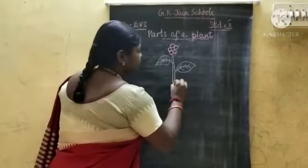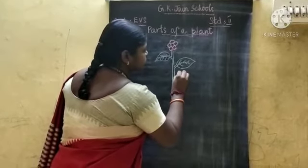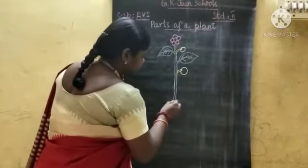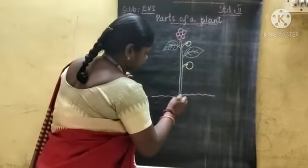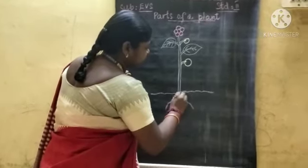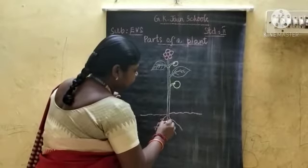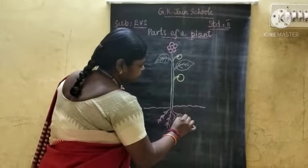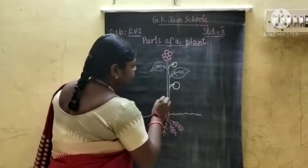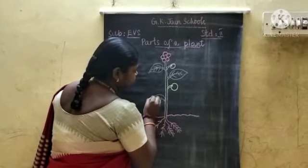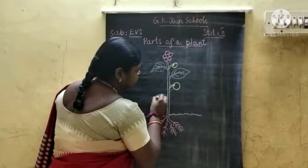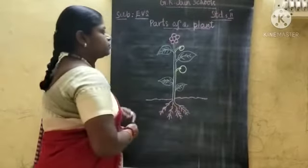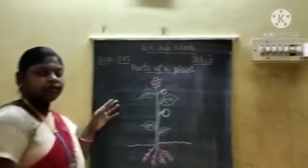Now I am going to draw a fruit. You are all second standard here, so I draw it very easily. These are the roots. I am going to draw some more leaves here. Shall we label the parts of a plant, children?